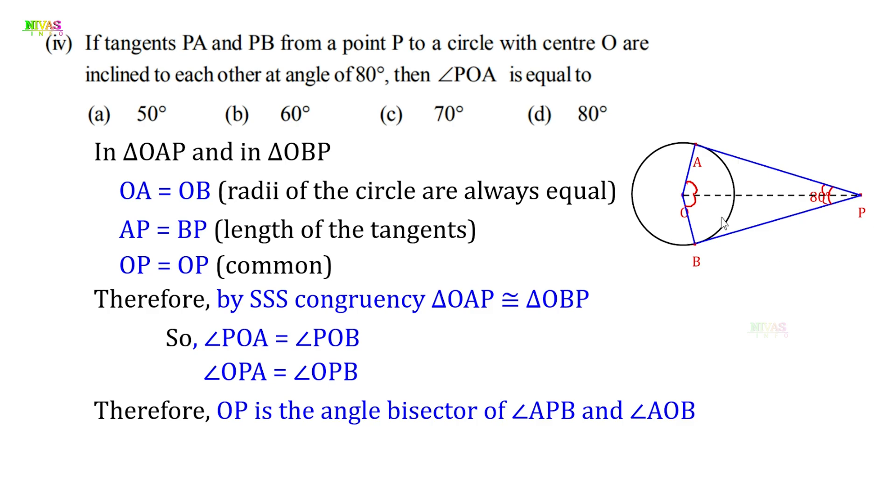Since OP is the angle bisector, angle OPA equals angle OPB equals one-half of the total angle APB. The total angle APB is 80 degrees, so one-half times 80 equals 40 degrees. Therefore, angle OPA equals 40 degrees and angle OPB equals 40 degrees.